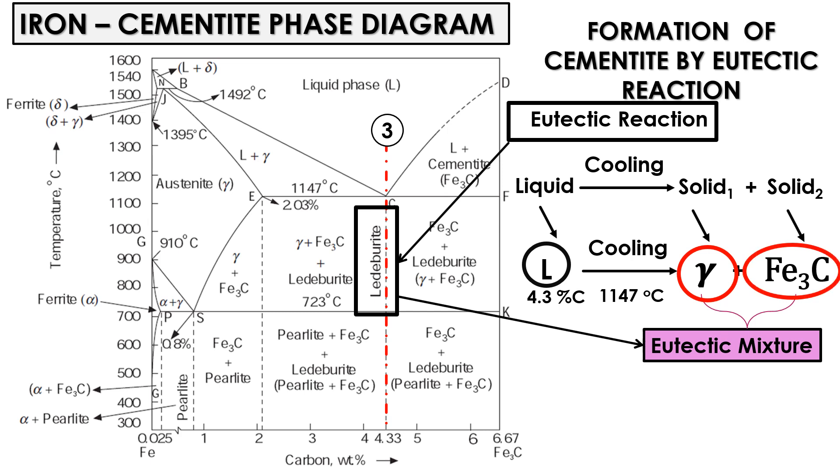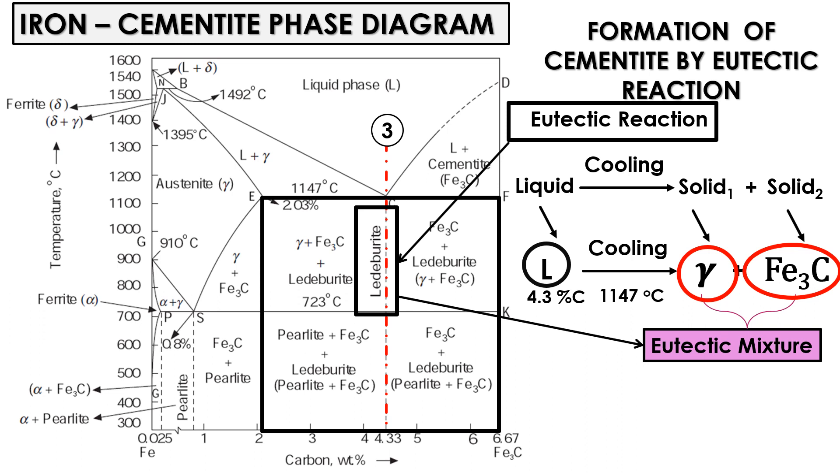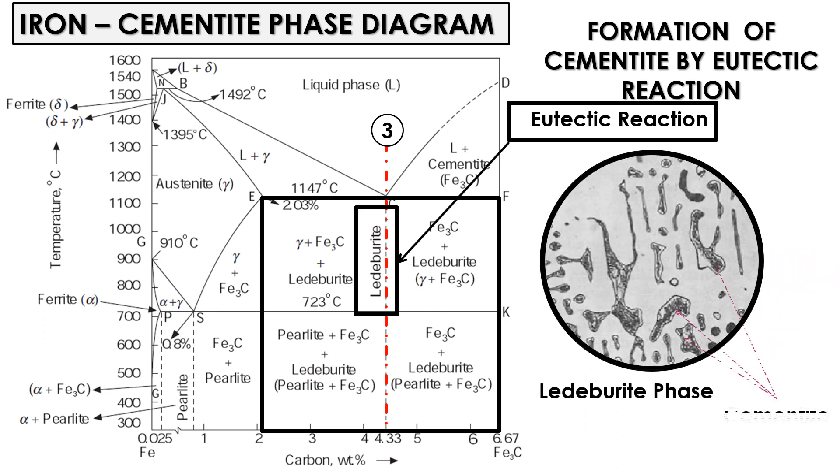Its mechanism will be discussed in the upcoming lecture. The ledeburite phase can appear with any composition between 2.06 percent to 6.67 percent of carbon. This phase is characterized by its distinctive appearance under the microscope, showing regions of dark cementite embedded in a matrix of bright austenite. It is a brittle phase, typically undesirable in most applications due to its poor mechanical properties.